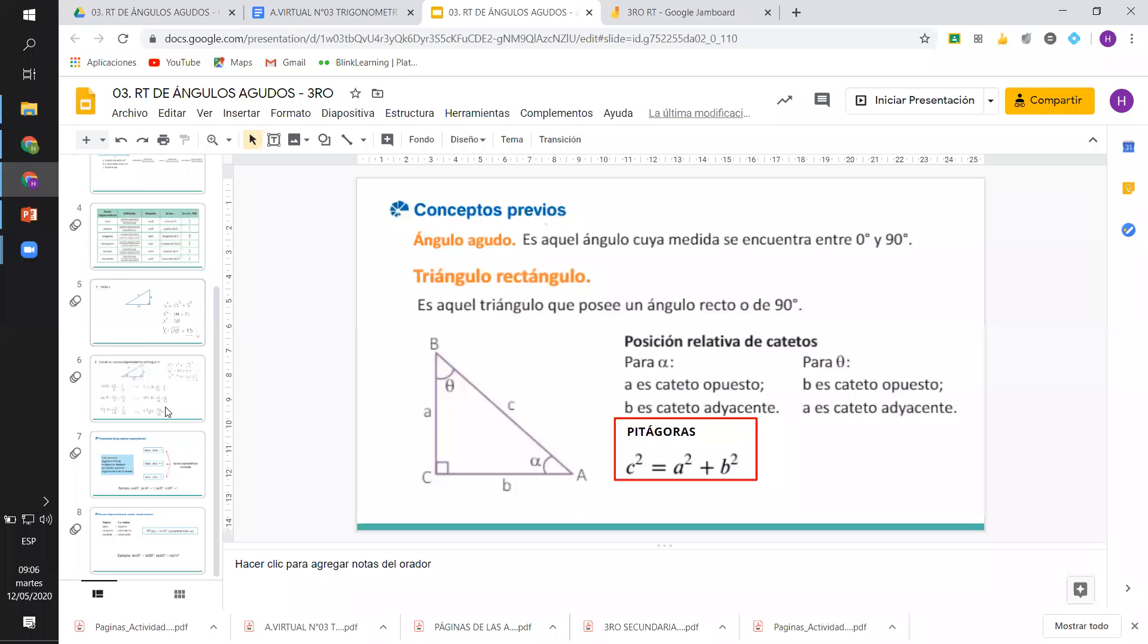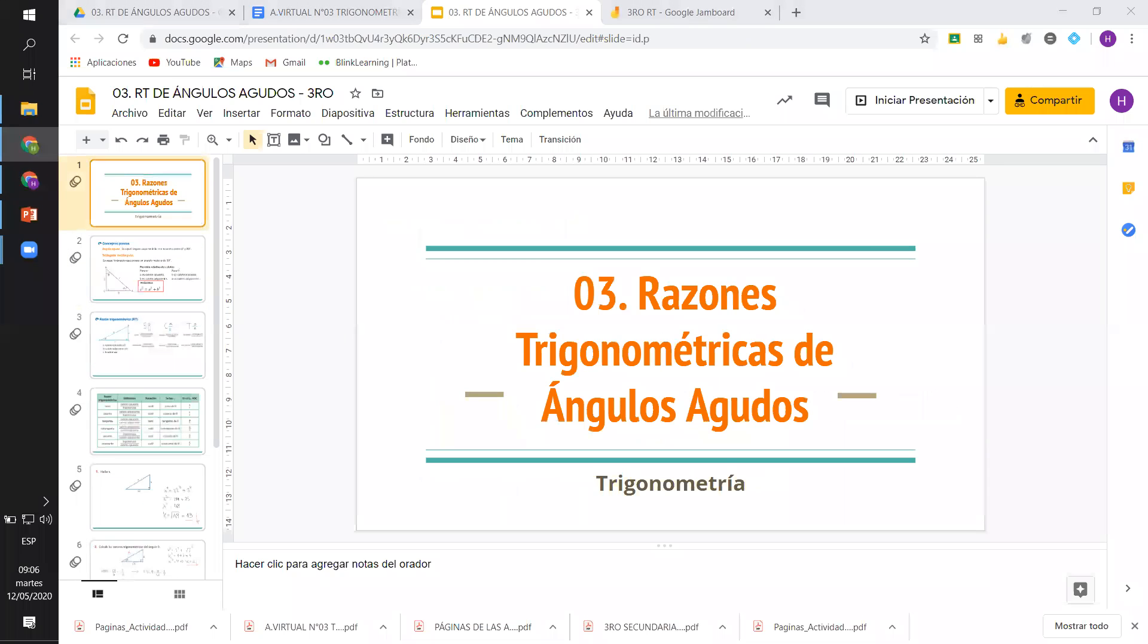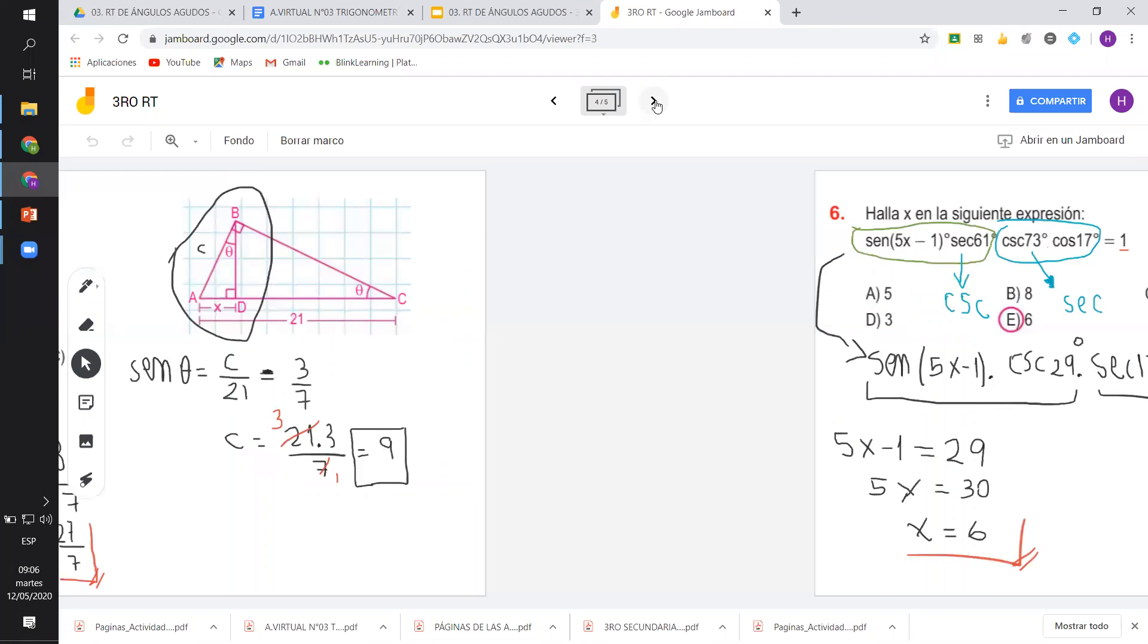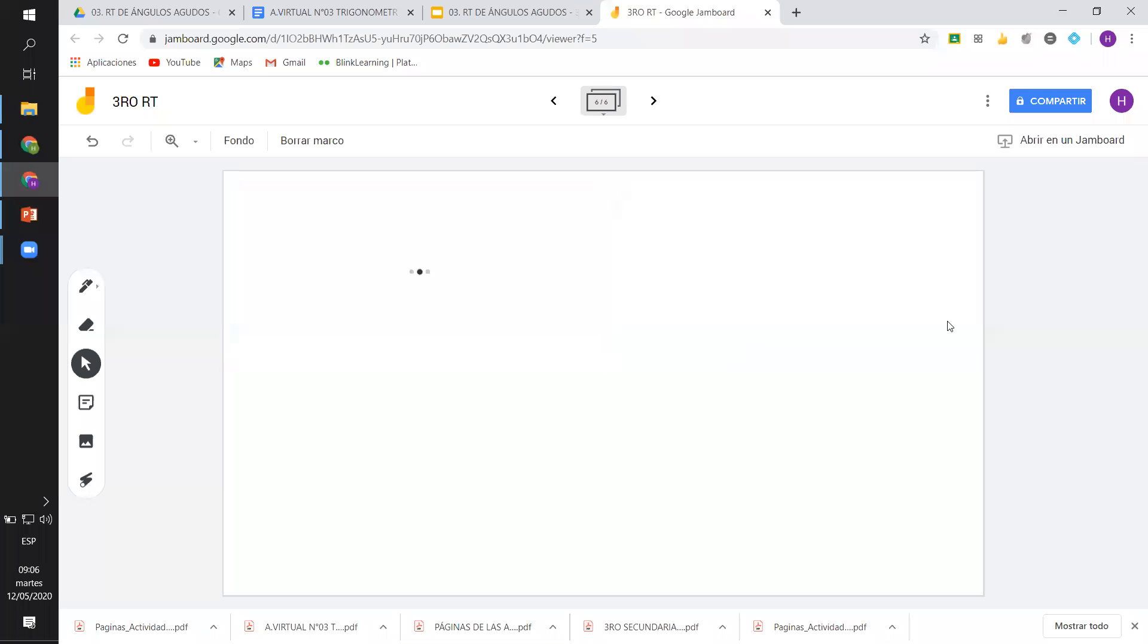Vamos a ver el ejercicio 2. Ese es el ejercicio, el que está en pantalla. Dice: haya tangente de teta. Entonces acá nos parece complicado. Miren, acá lo que van a hacer es, cuando no teníamos datos en el triángulo, ¿qué teníamos que hacer? Teníamos que ponerle variables, ponerle letritas.